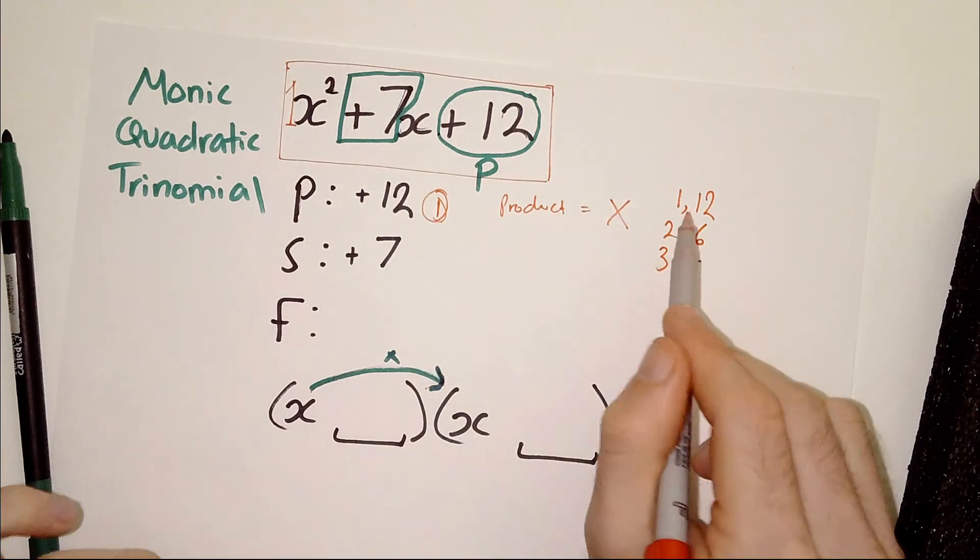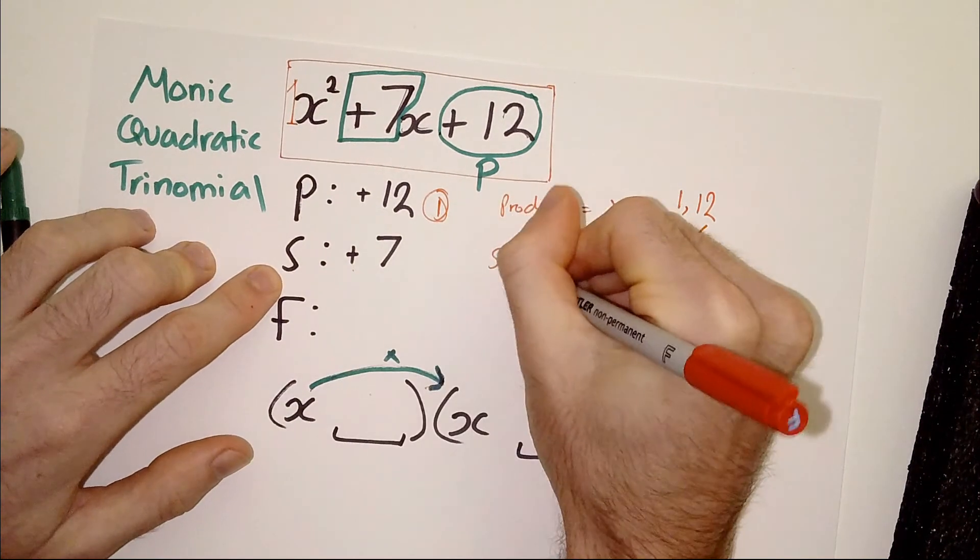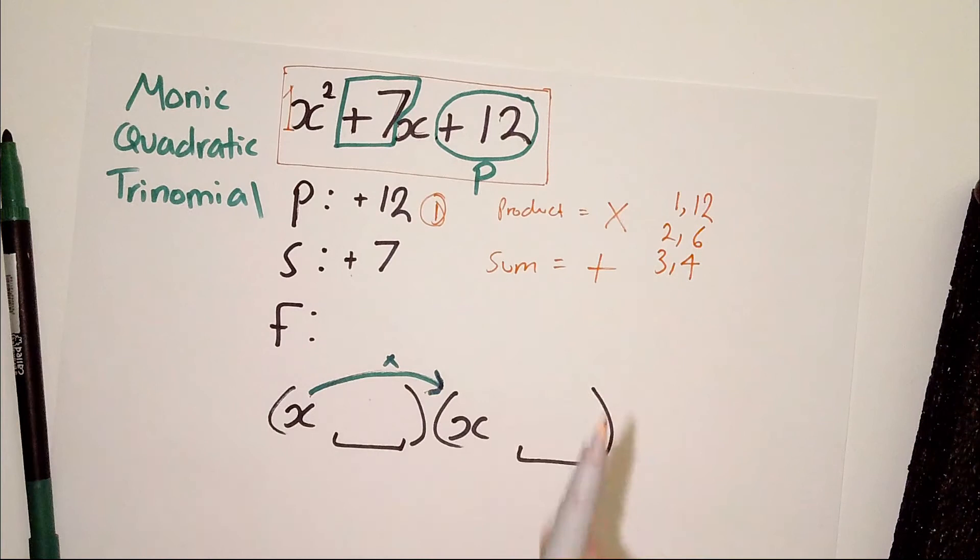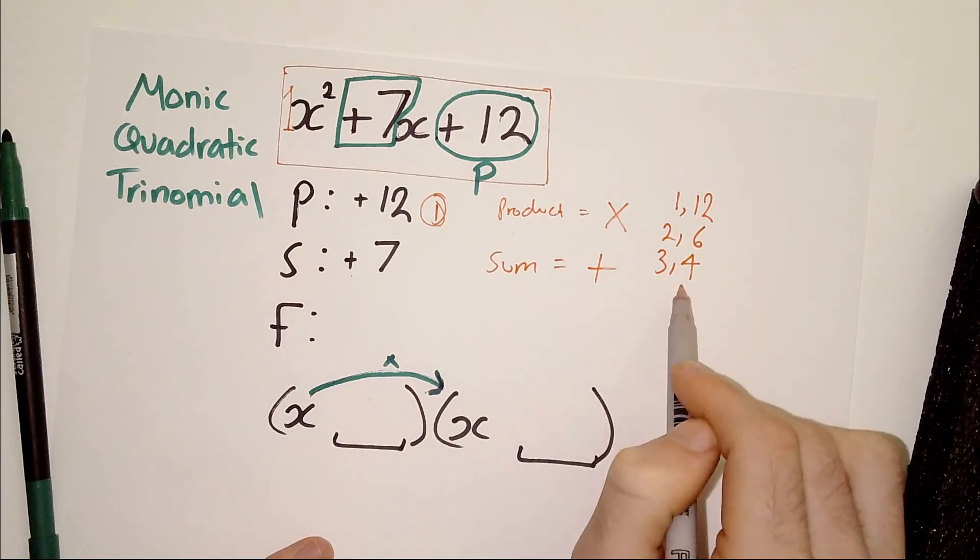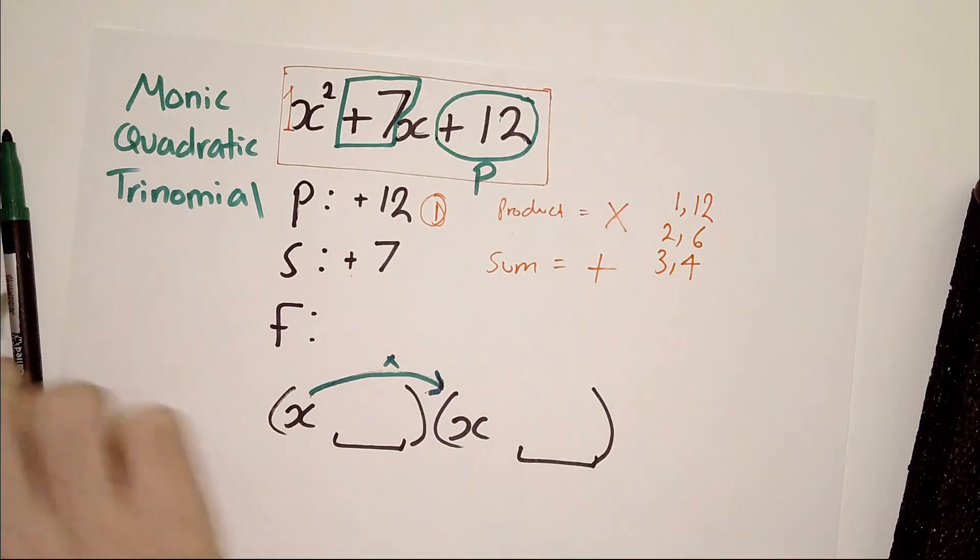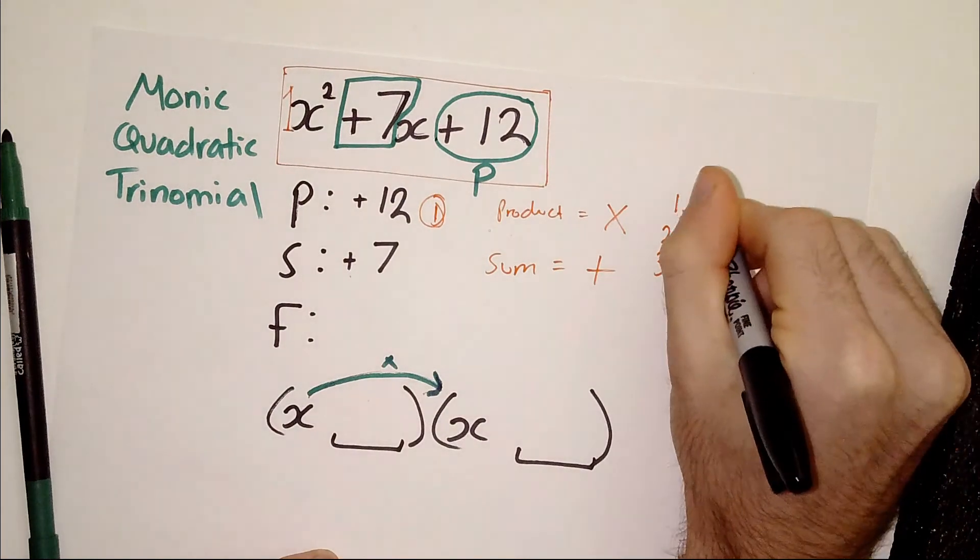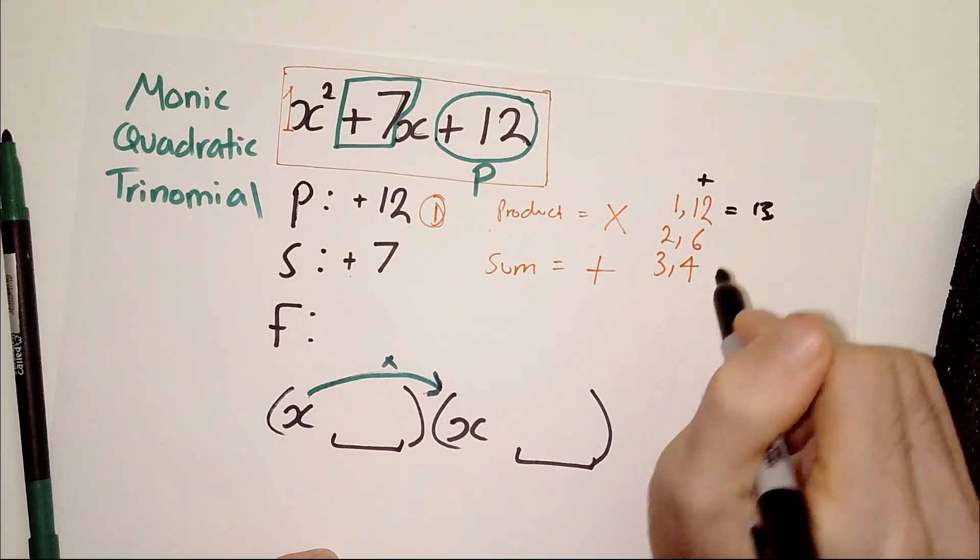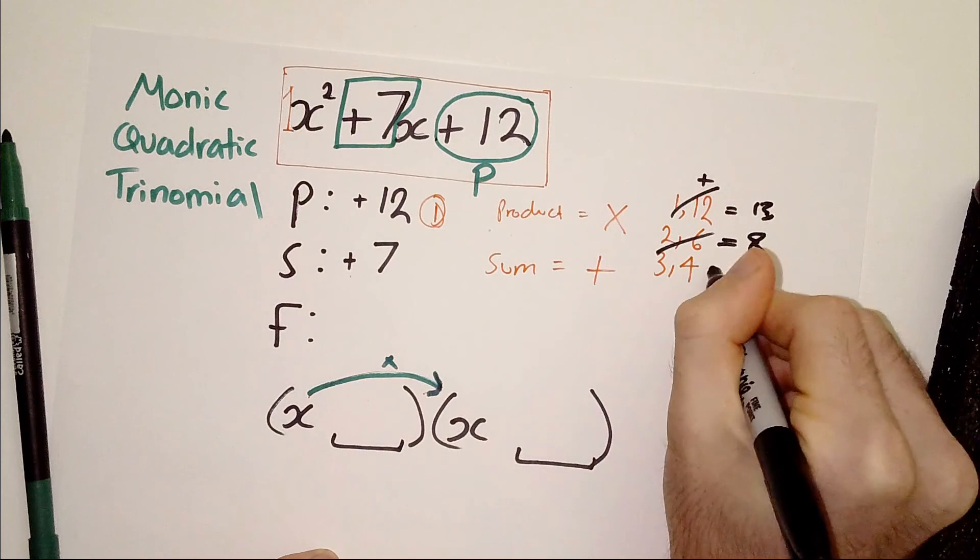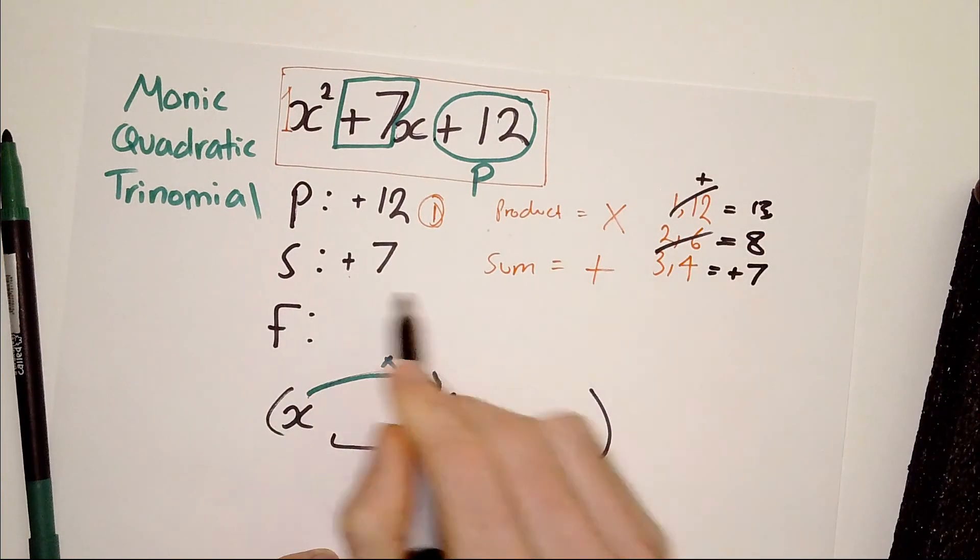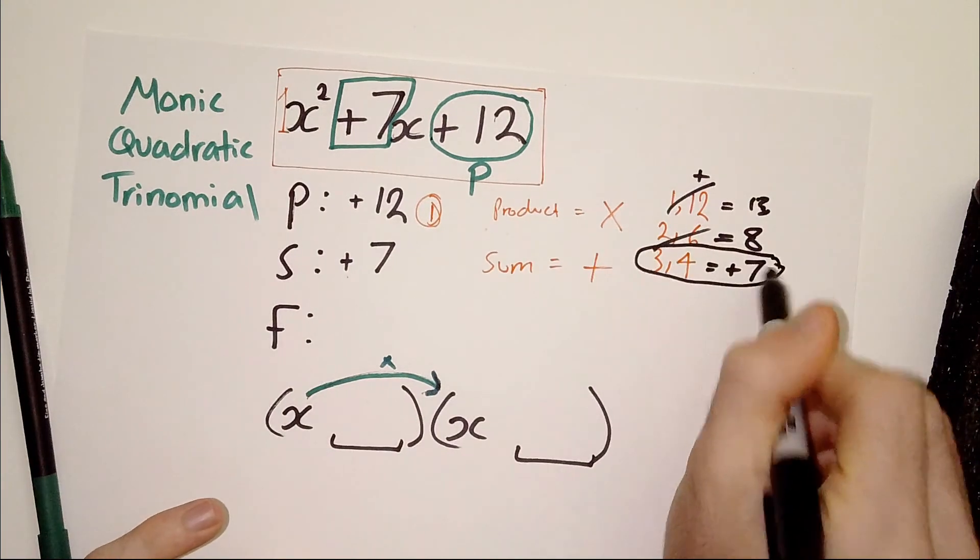What you then do is you say, which one of these combinations add to plus seven? Now, why am I saying add? Because s means sum. So, notice it's very important to do the P step first. You get your possible combinations that could work. These are the possible factors, by the way. And you are asking yourself, which of these combinations would add to plus seven? One plus 12 is 13. So, that is clearly not the answer. So, we cross that off. Two and six equals eight. Not the answer. Three and four equals positive seven. That's the money. Three and four is our answer. See how one of them will work out. And you put that combination here.